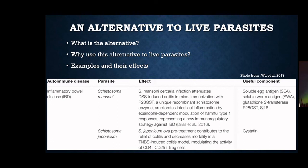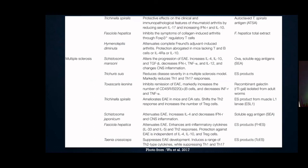A second molecule is fasciola hepatica excretory-secretory products, derived from a common liver fluke. It has been shown to be helpful in EAE and is also important for immune defense against viruses, fungi, and bacteria. It increases cytokines that fight the inflammatory response and alleviates the immune response. These are only two examples; there are many others that time did not permit discussing, but these products have been proven beneficial so far in mice.